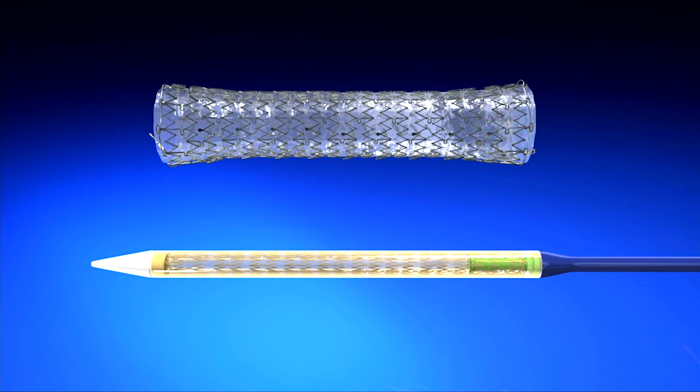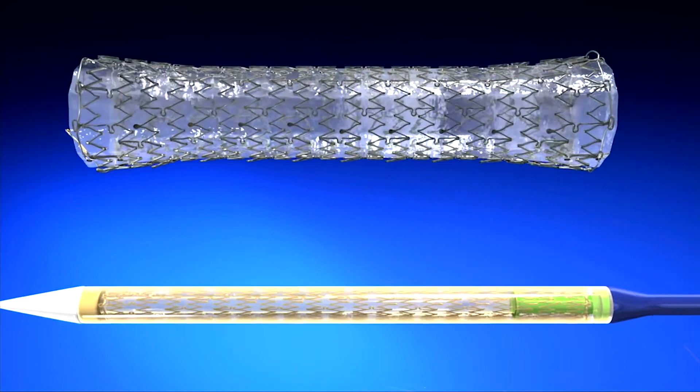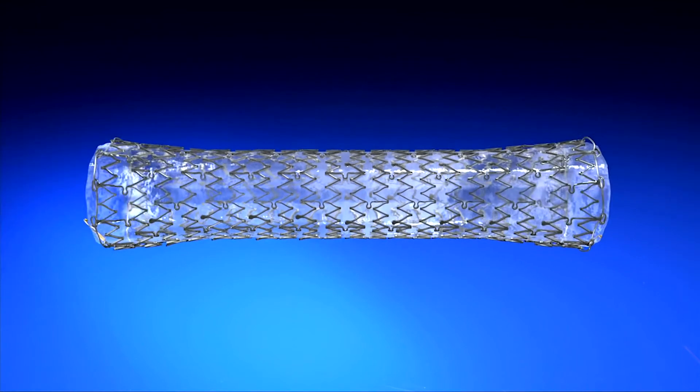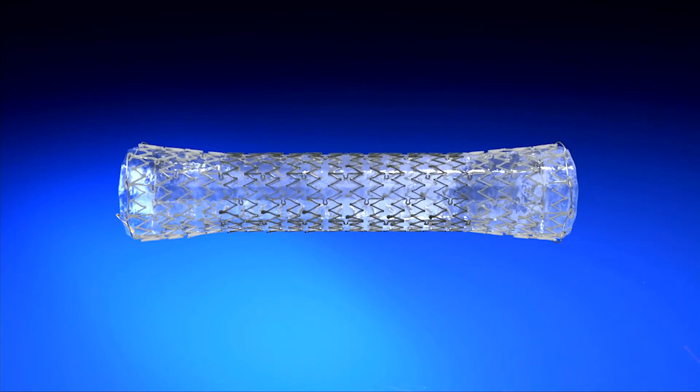The unique laser-cut design results in virtually no foreshortening or elongation commonly found with woven stents. The laser-cut design of the stent also allows for variation in radial force along the stent body with soft, flared ends and a firm mid-body.